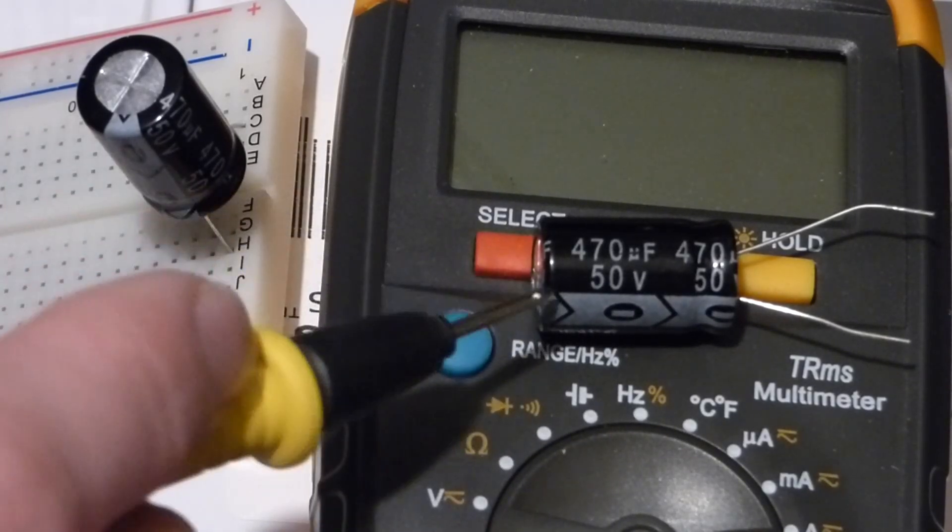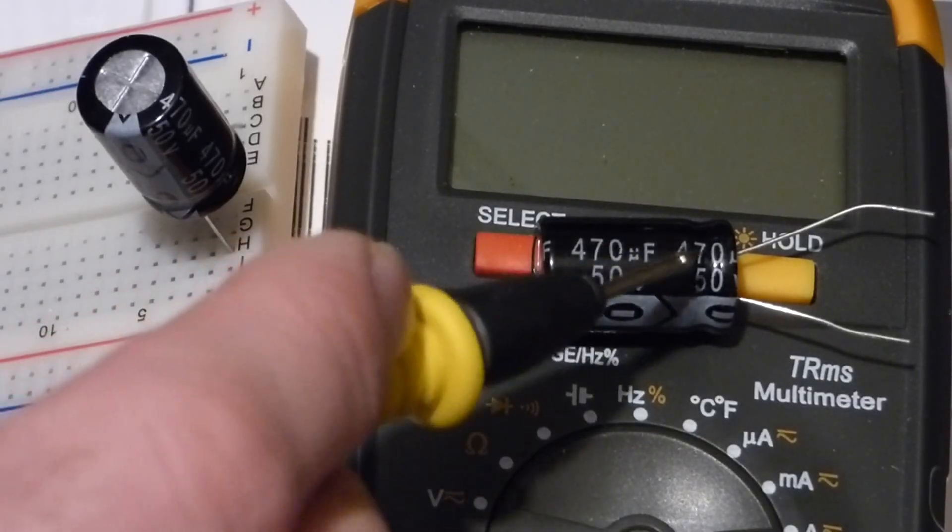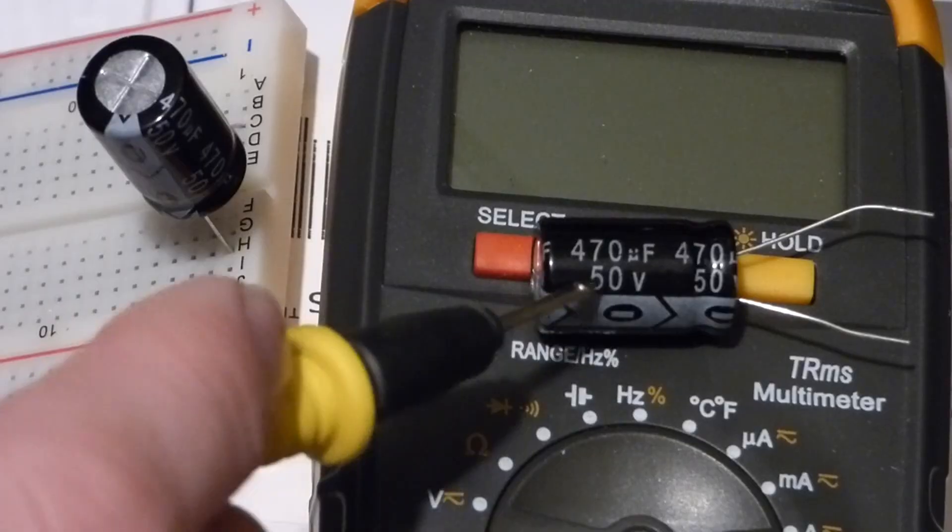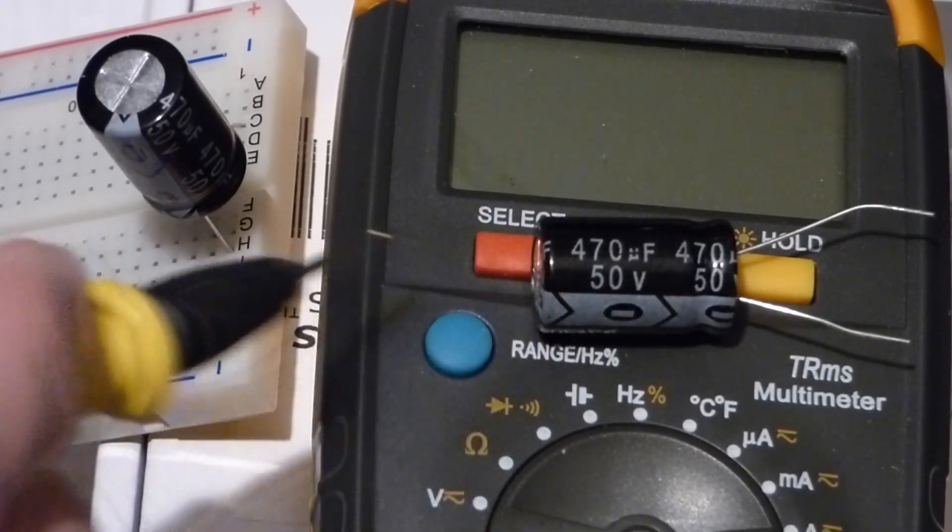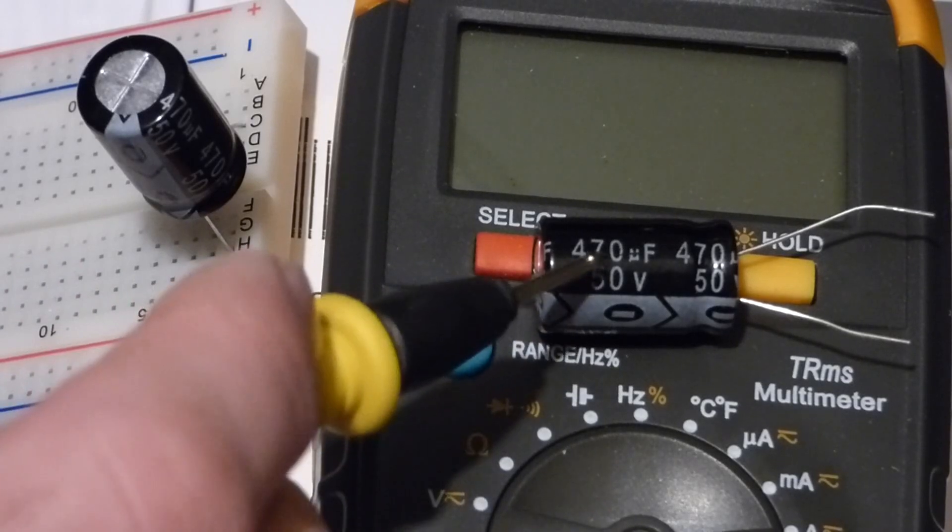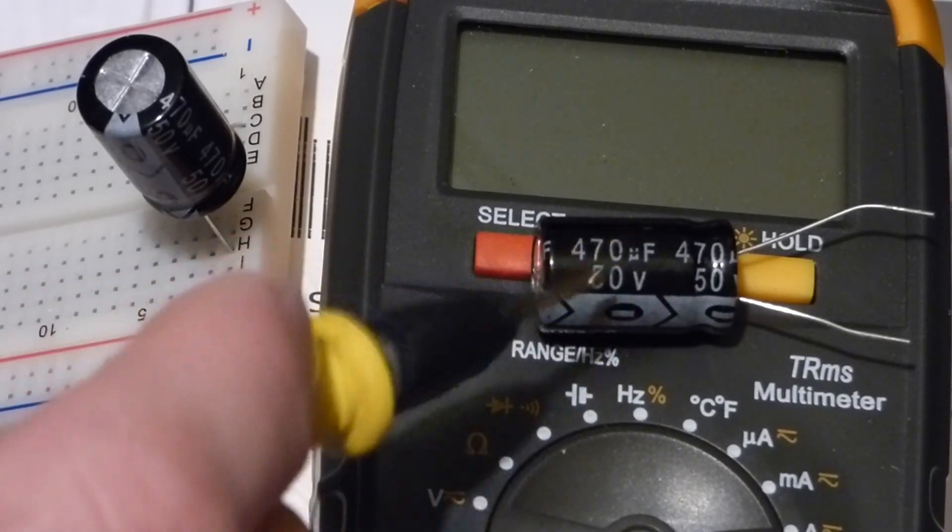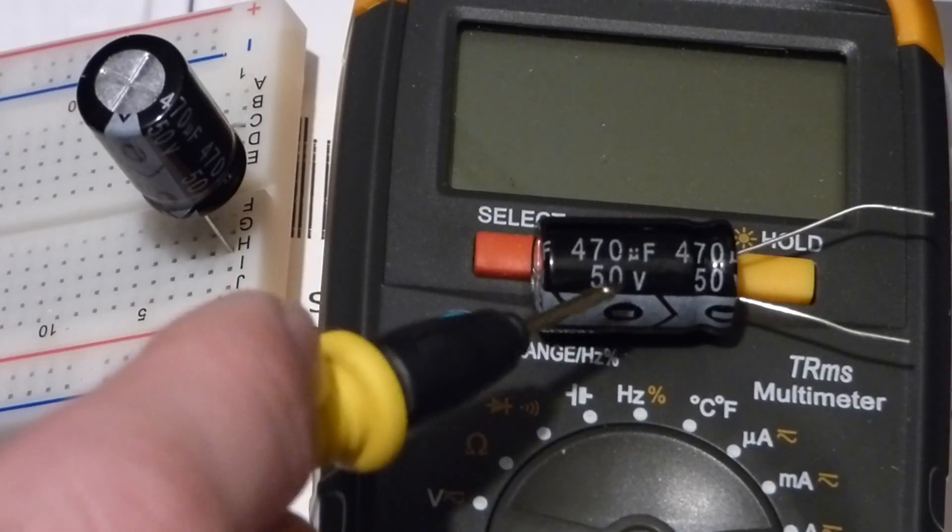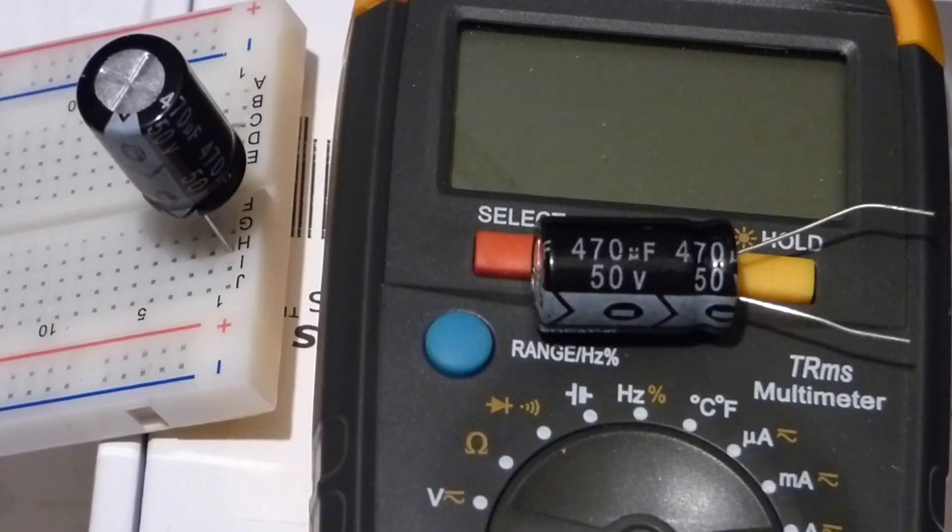Now microfarads, that's one millionth of a farad. So if this was one microfarad you would need one million of these to equal a farad. This one has 470 microfarad. And that tells you how much this will charge for every single volt you put on here. And you can put up to 50 volts on there.